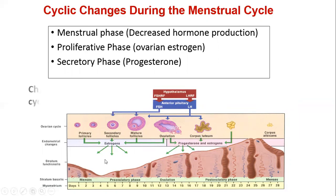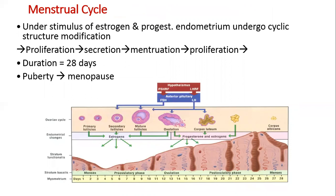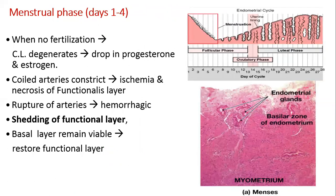Changes in the secretory activity of the endometrium during the cycle are correlated with the maturation of ovarian follicles. Under stimulation of estrogen and progesterone, the endometrium undergoes cyclic modification — approximately 28 days from puberty up to menopause at around 45 to 50 years of age. In the first one to four days, when no fertilization happens, the corpus luteum degenerates, there is a drop in progesterone and estrogen, the coiled arteries constrict causing ischemia, then rupture, hemorrhage, and shedding of the functional layer. The basal layer remains viable and restores the functional layer.